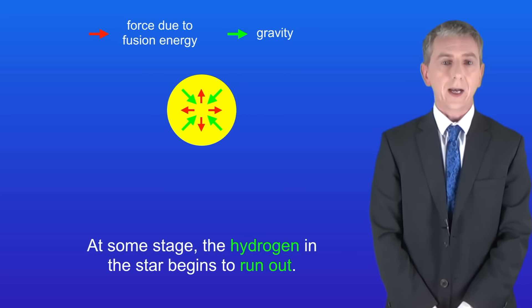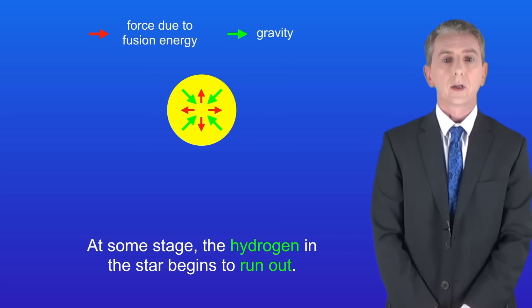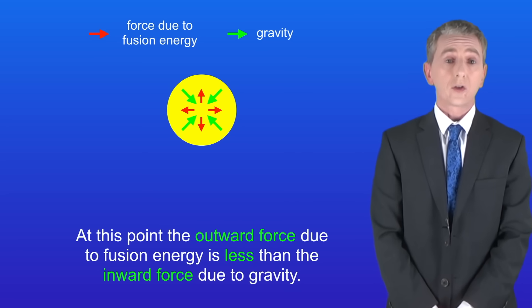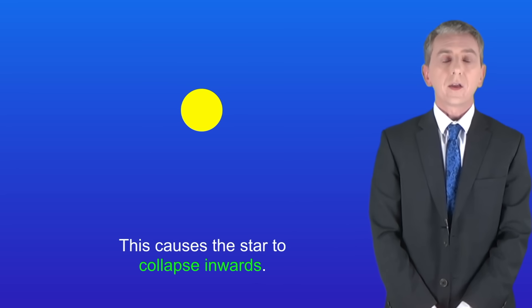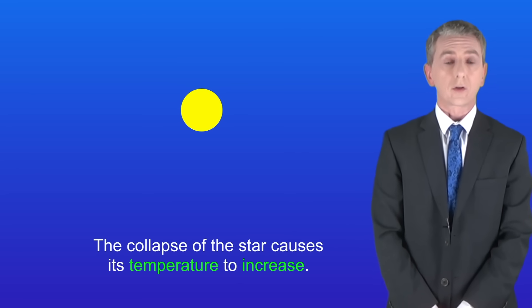At some stage the hydrogen in the star begins to run out. At this point the outward force due to fusion energy is less than the inward force due to gravity. This causes the star to collapse inwards, and the collapse causes its temperature to increase.